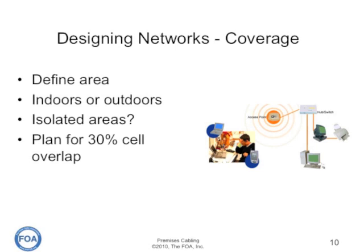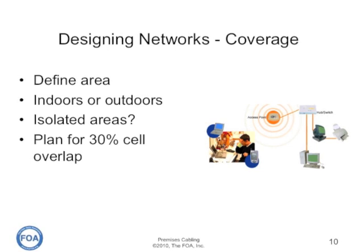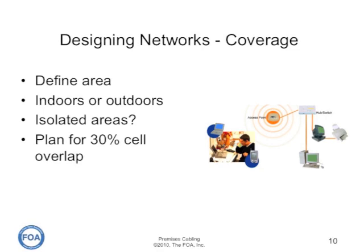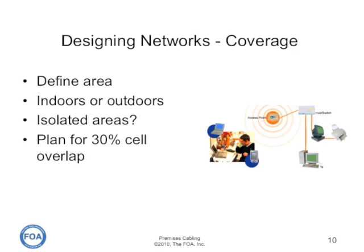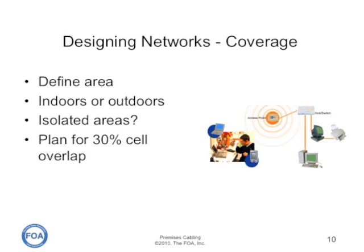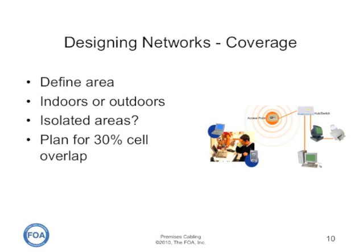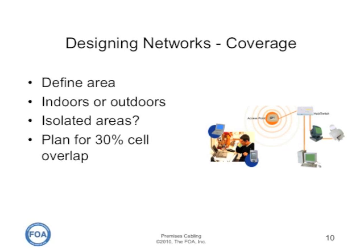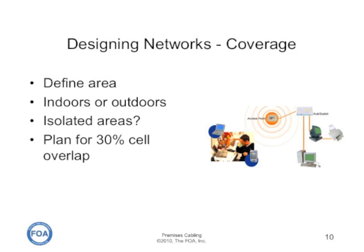Planning for coverage, you need to define the area that the wireless system is expected to cover. Is it indoors or outdoors? Are there areas that will be isolated and not expected to get coverage from a given access point? The general rule is to allow for about 30% cell overlap from an access point.